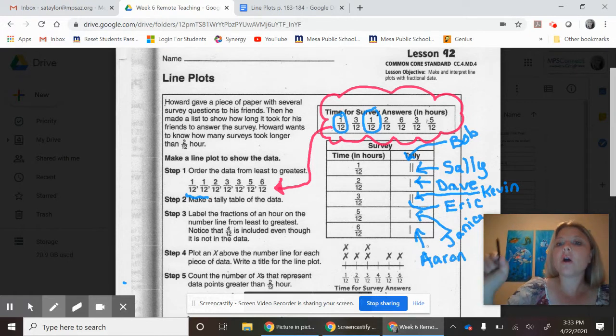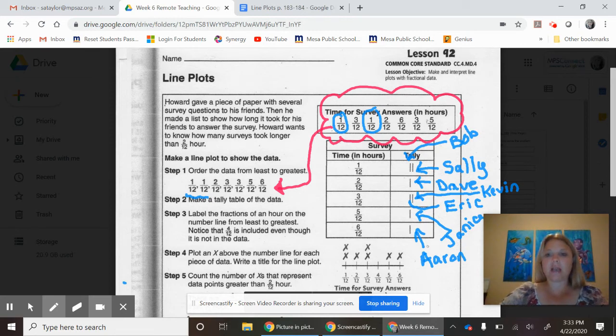You don't have to put people's names next to it, but what I'm trying to help you understand is that each of those tally marks are a person, and that's what you're trying to represent. After you have put them in order, you are going to put tally marks next to them.